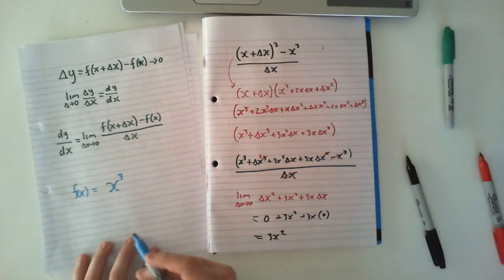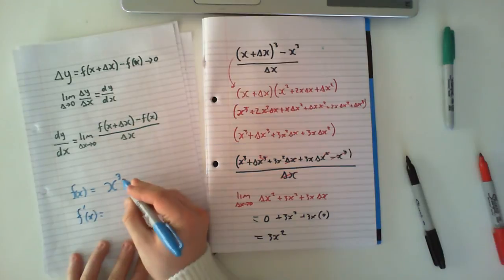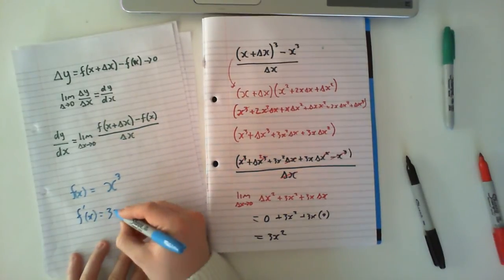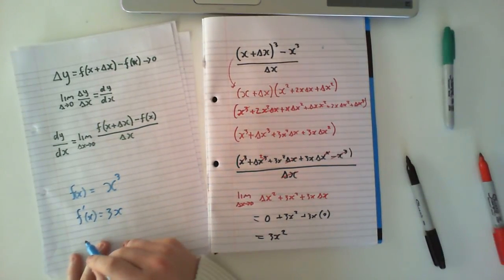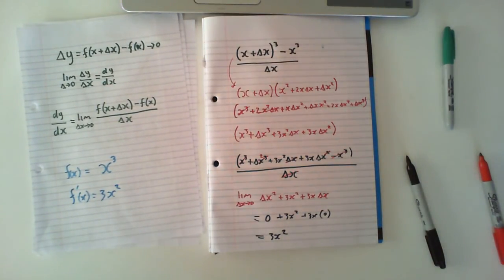And if we go back and we know what the derivative f'(x) is, we move our 3 down, keep our x, we knock our power down by 1, which is 2. 3x squared, 3x squared. It works. And that's why differentiation actually works.